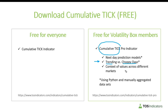The second feature uses data to give you context of whether you should be expecting a trending versus a choppy day, using purely the cumulative tick values. And then finally, in the pro version, we're also going to take context of values across different markets — for example, the NYSE tick for the S&P, the version for the NASDAQ — which plots automatically and uses the right tick value as you switch between markets.